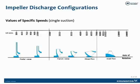Specific speed is a dimensionless value. This chart shows the relationship of specific speed with impeller types. Specific speed is defined as the speed at which a given impeller would operate if reduced proportionally in size so as to deliver a flow of one gallon per minute at one foot of head. An impeller generating a very large volume of water at very low head has a high specific speed, while an impeller generating very low flow at very high head has a low specific speed.